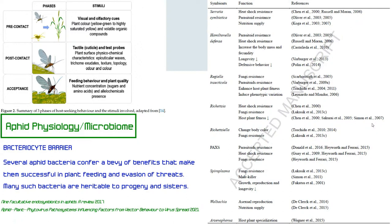Once an aphid contacts a plant, it uses gustatory cues and olfaction to determine suitability — essentially a taste test. Sugars are phagostimulants: higher sugar content in the phloem leads to more feeding, assuming the plant is a good host. Aphids belong to the Hemiptera — 'half wings' — and have two pairs of wings, one of which is partial. This wing structure helps distinguish them from fungus gnats, which have only one full pair.